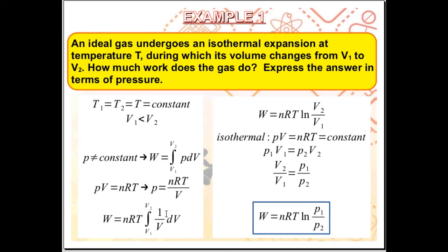Integrating 1 over VdV, we get Ln of V2 over V1. So, work done is now equal to nRT Ln of V2 over V1.